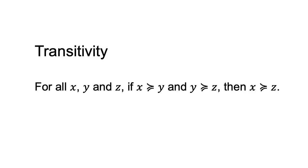Under transitivity, if a person prefers A to B and B to C, they will prefer A to C. Formally, we can state the transitivity axiom as follows. For all X, Y and Z, if X is weakly preferred to Y and Y is weakly preferred to Z, then X is weakly preferred to Z.